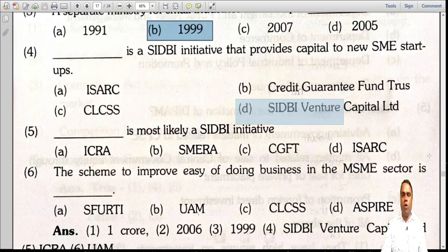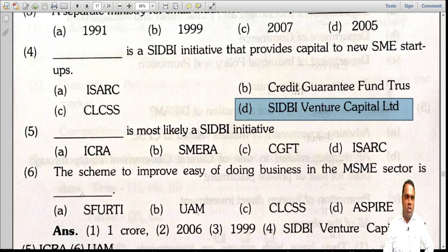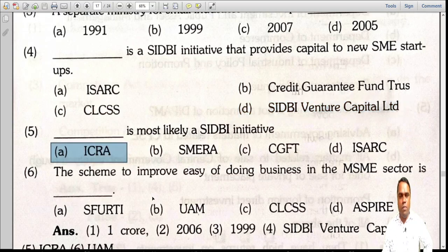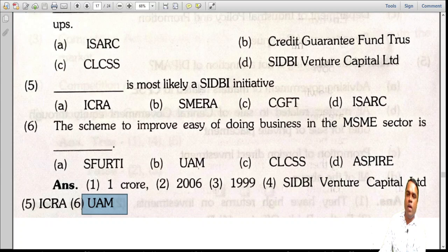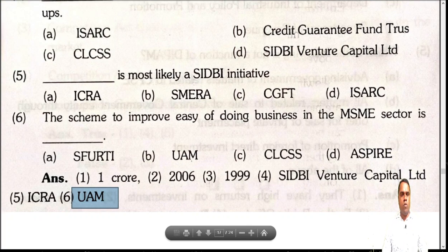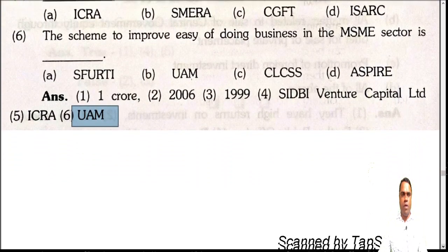The answer is option D: SIDBI Venture Capital Limited, which provides capital to new industries and start-ups. Next: which is a SIDBI initiative? The answer is IKRA — IKRA has been started by SIDBI. The scheme to improve ease of doing business in the MSME sector is UAM — Udyog Aadhar Memorandum — which is an initiative for ease of doing business in the MSME sector.